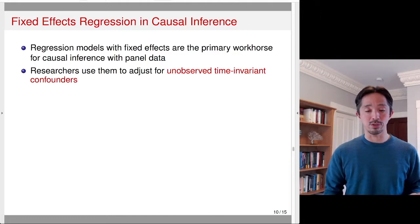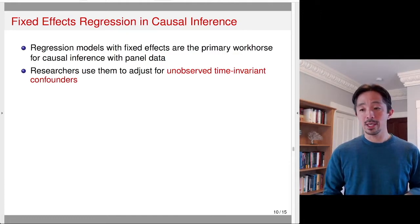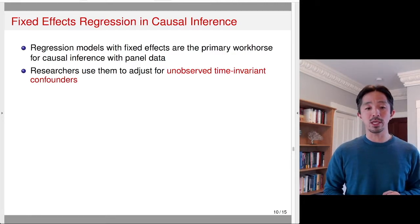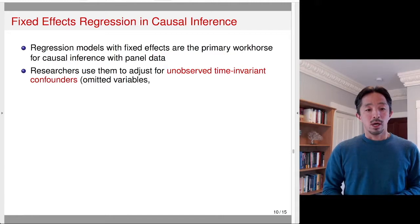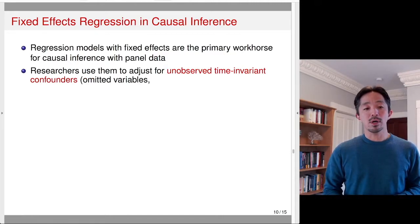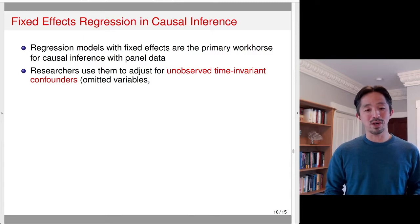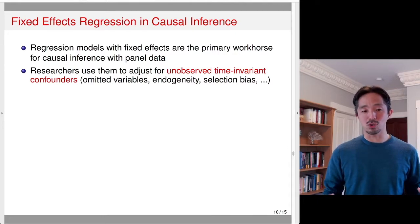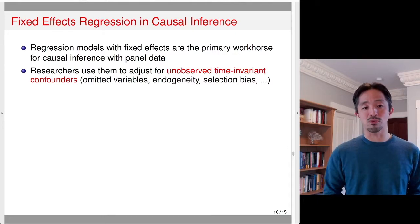It's related to the difference-in-differences design in the case of two-by-two, two-time-period case, but not in general. This is sometimes called the omitted variable problem — accounting for omitted variables or endogeneity and selection bias. There are different terms, but it's basically trying to adjust for the unobserved time-invariant confounders.